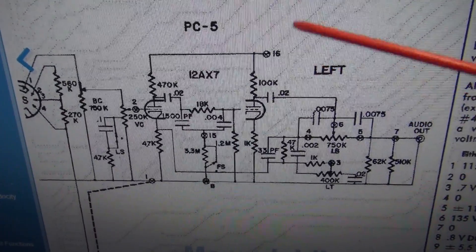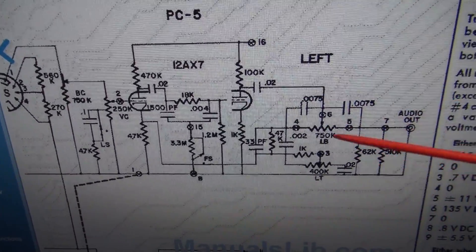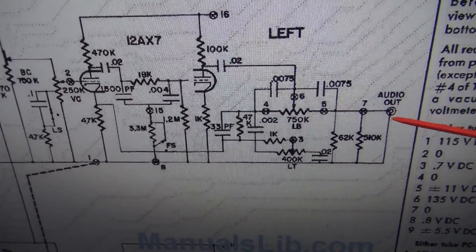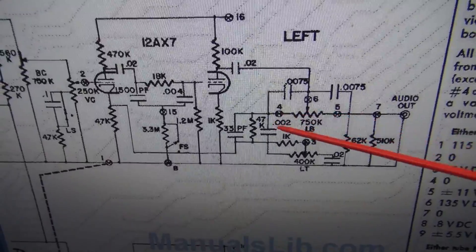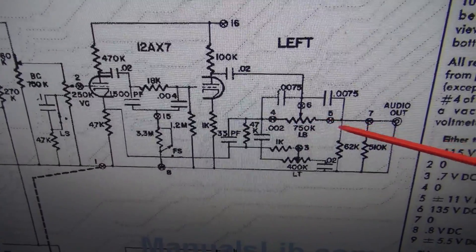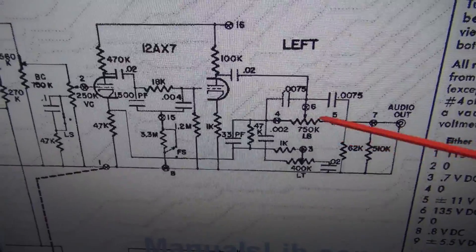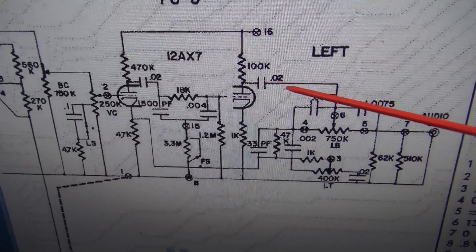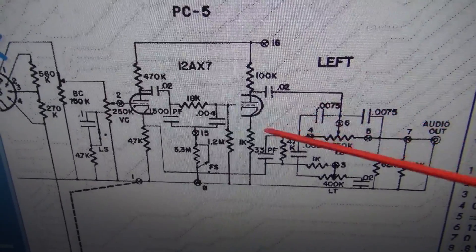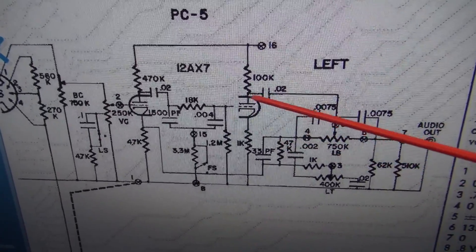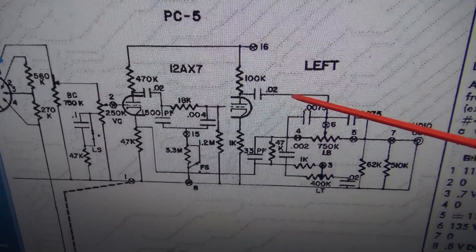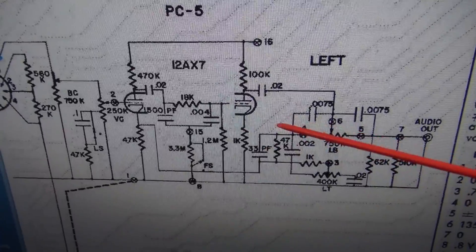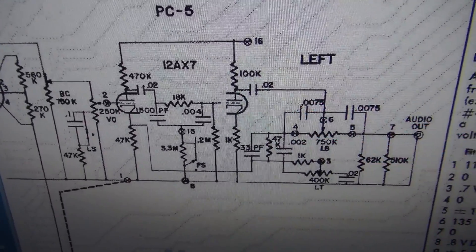Now here is one channel of the PAS preamp. Now we are seeing DC voltage on the audio output. So if you trace that back, you'll see that base control. Remember I was moving that back and forth and the voltage was changing with it. If you follow the wiper arm up and over, there is a .02 coupling cap coming off of that 12AX7. So you got high voltage here. You should have no voltage here because that cap is supposed to block the DC. But I bet you that one of these black beauties has shorted out.